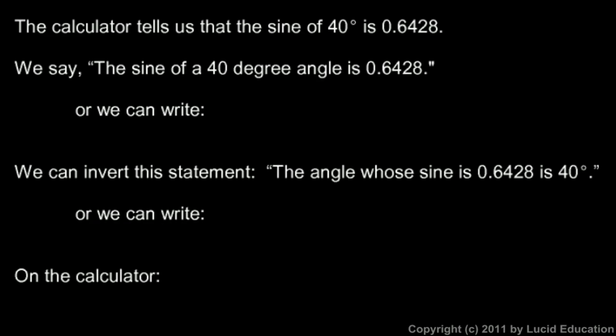Okay, so we say the sine of a 40 degree angle is 0.6428, and mathematically we write it like this. Sine of 40 degrees, and it's also sometimes pretty common to put a parenthesis like this. Sine of 40 degrees is equal to 0.6428. And again, this is not multiplication. This is not sine times 40. This is the sine of a 40 degree angle, and it's equal to this number, 0.6428.